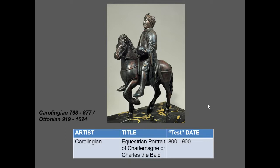The equestrian statue visually references the equestrian statue of Marcus Aurelius, but also feels somewhat like the colossal statue of Constantine in its simplicity. The figure is at a larger scale than the horse itself, and the whole object is far smaller than life size — cast bronze, but we have lost the skill of bronze casting at an enormous scale. This is either Charlemagne or his successor Charles the Bald, but definitely one of the Carolingian emperors.